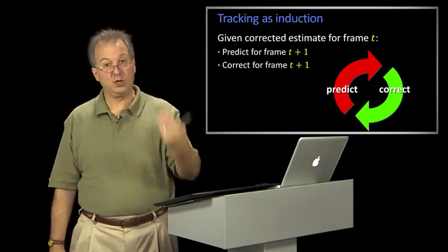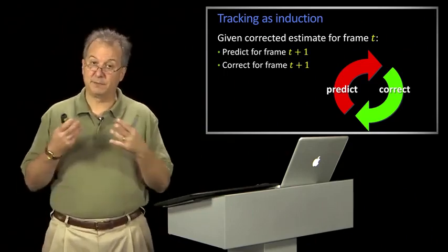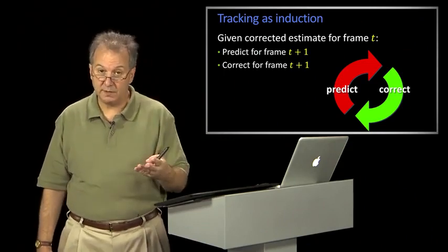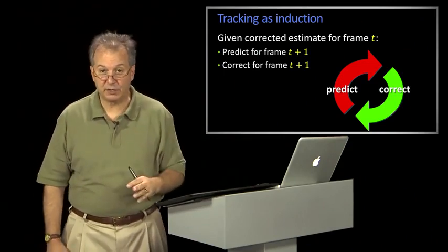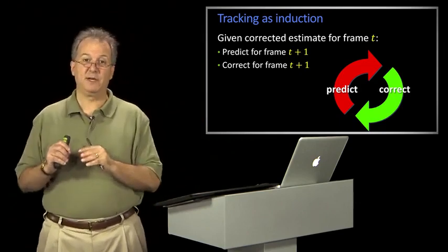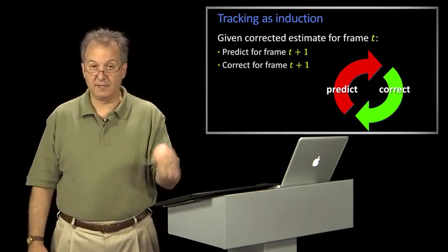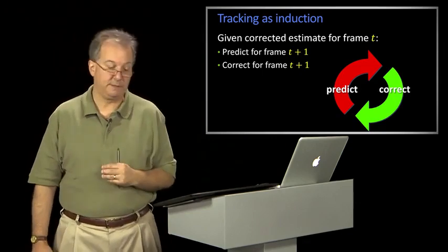So welcome back to computer vision. We're talking about doing tracking. Now, last time we introduced this idea of tracking as induction. That is, if I know what's going on at time t or I have some belief about the state of the universe at time t, I make a prediction for time t plus one. Then based upon that prediction that might affect how I go get my measurement, I get my measurement, it's noisy, and I correct for t plus one.